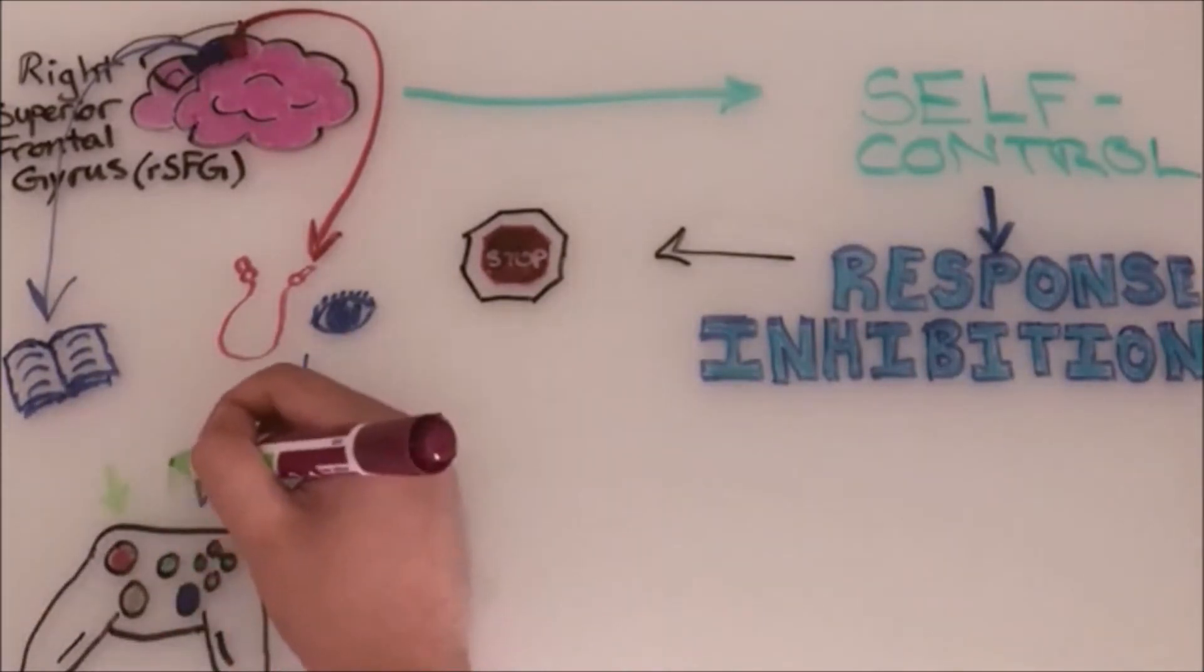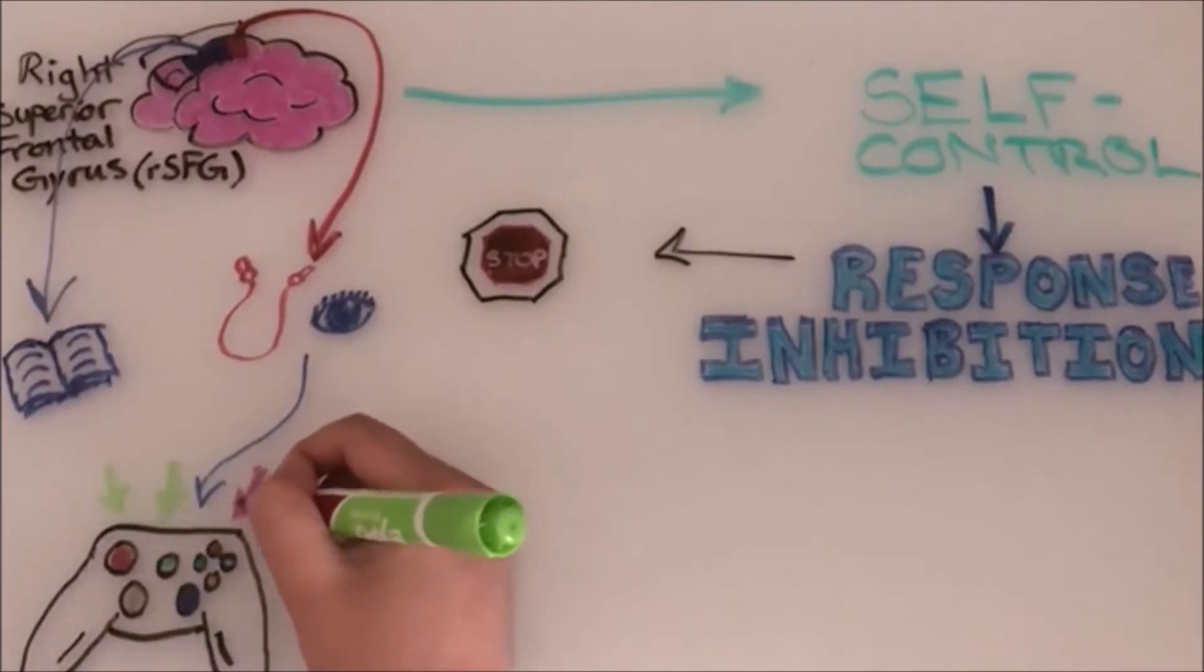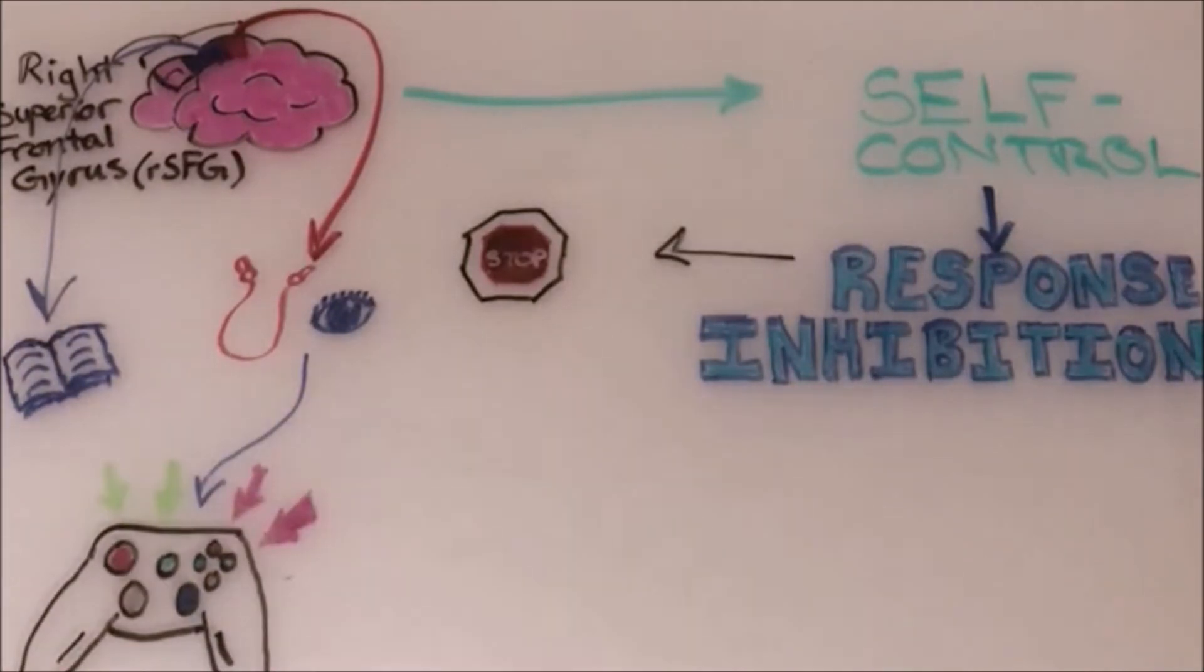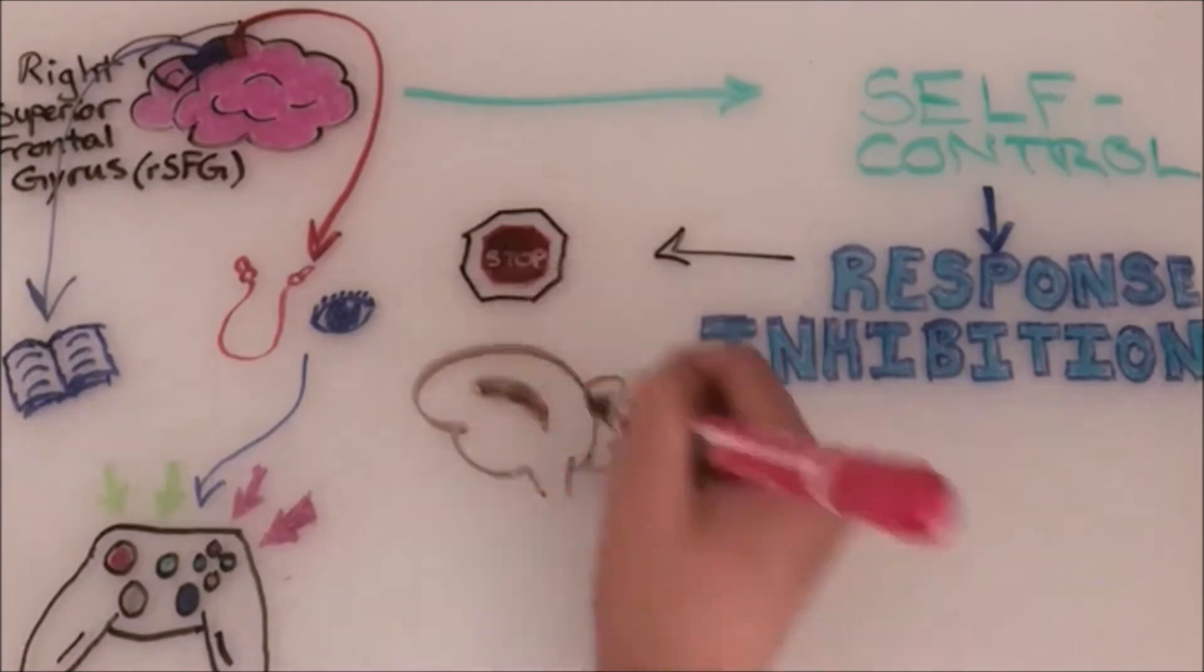Well, these parts of the RSFG may help you improve on this by making contact with different networks of the brain, or different brain regions talking to each other.